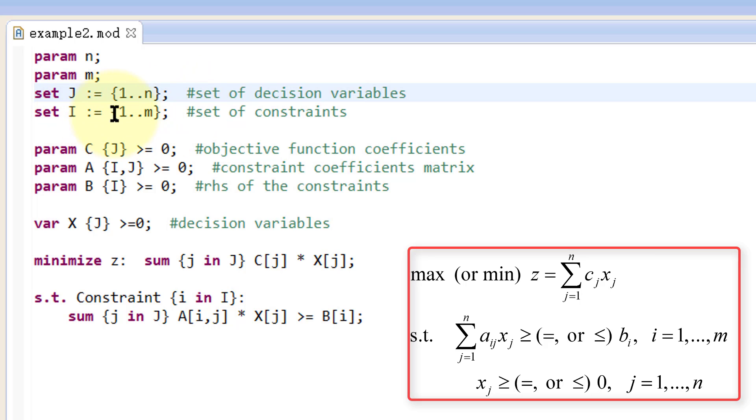Then we define capital letter I, which is a set that contains the indexes of all the constraints 1 through m. Now we define a constant vector cj to represent the objective function coefficients, a constant matrix aij to represent the constraint coefficient matrix, a constant vector bi to represent the right-hand side of the constraints.